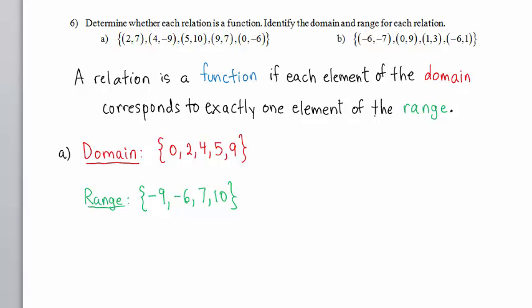Now let's determine if this relation is a function. In this case, we proceed one by one. We look at the number 2 in the domain. It corresponds to 7. We do not see 2 corresponding to any other y-value. The value 4 from the domain corresponds to negative 9 in the range. 4 does not correspond to any other number in the range.